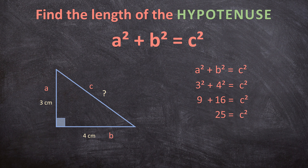We have the value for C squared, but we want the value for C alone. To get rid of that square we use a square root, and we must also apply it to the 25. The square root of 25 is 5, so C equals 5. Remember to include the unit — C is not just 5, it is 5 centimeters. So the hypotenuse is 5 centimeters.